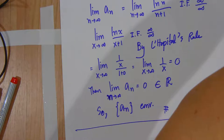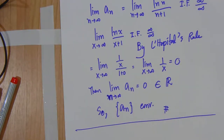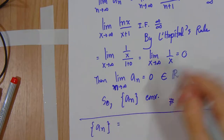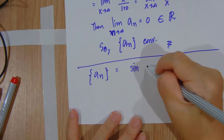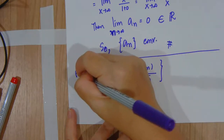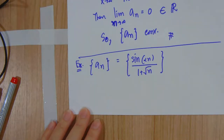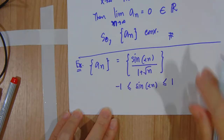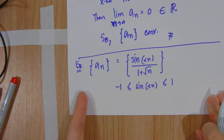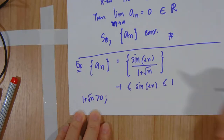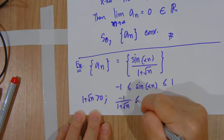Let's see more examples where we have to use more techniques. If the term a_n equals sin(2n) over 1 plus square root of n, from this term we know that the value of sine has amplitude equal to 1, meaning the value of sine is greater than or equal to negative 1 and less than or equal to 1. Since 1 plus square root of n is a positive term, we can divide by it without changing the inequality sign.